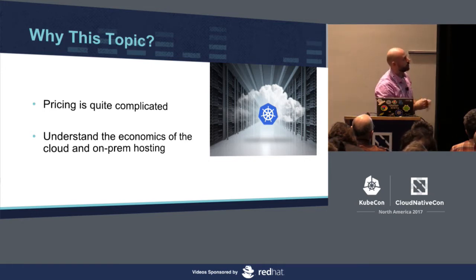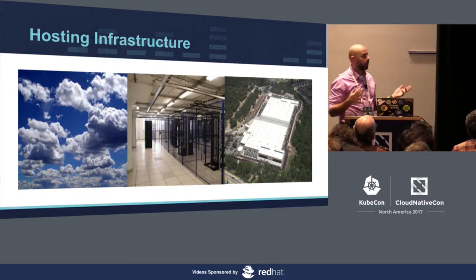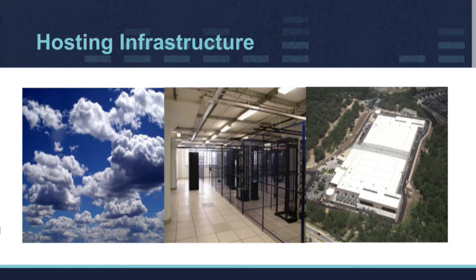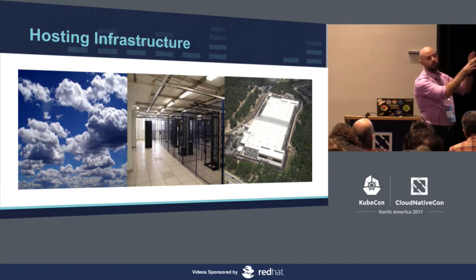That is essentially the means to understand the economics of cloud and on-prem hosting. There are several options for hosting your Kubernetes. Option number one — and this is very popular, as we heard in the keynote: 63% of Kube deployments actually run on EC2, so cloud. The second option is buying physical hardware and placing it in a carrier hotel or carrier provider — I'll refer to this as Colo. And there is a third case: building a designated facility with cooling, redundant power, fiber — that's called a data center. I'll focus on the first two options, as the third is very expensive and somewhat out of scope.